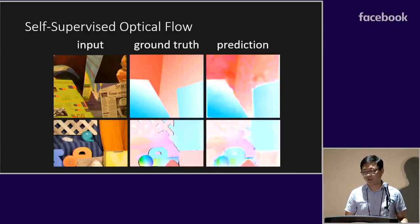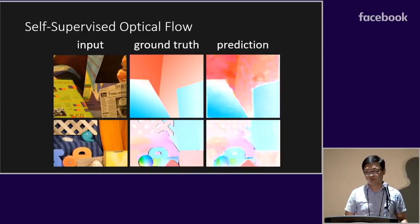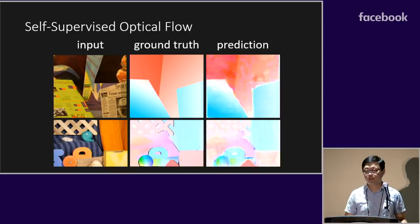Our approach is also able to train a neural network to compute optical flow in a self-supervised manner without using any ground truth annotations. Here are some visual results. We can see our approach generates good optical flow between input images.